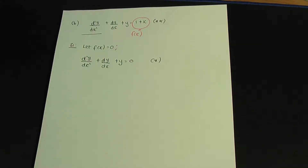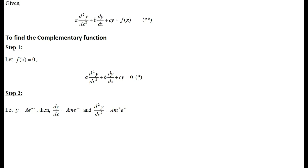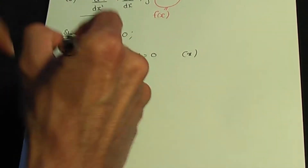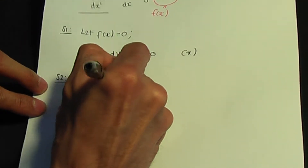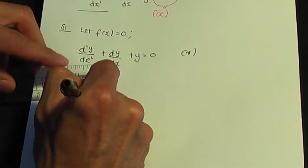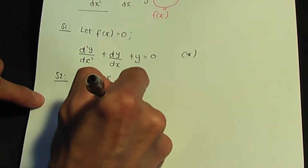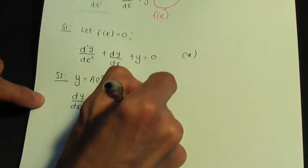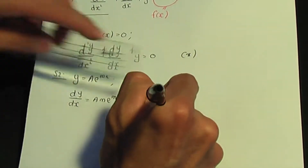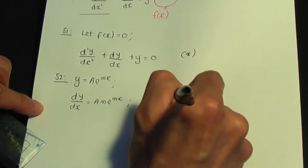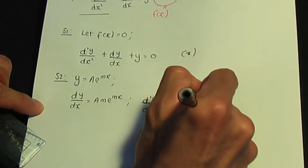Step number two: let y = Ae^(mx), where A and m are constants. Using this, dy/dx = Ame^(mx), and d²y/dx² = Am²e^(mx).